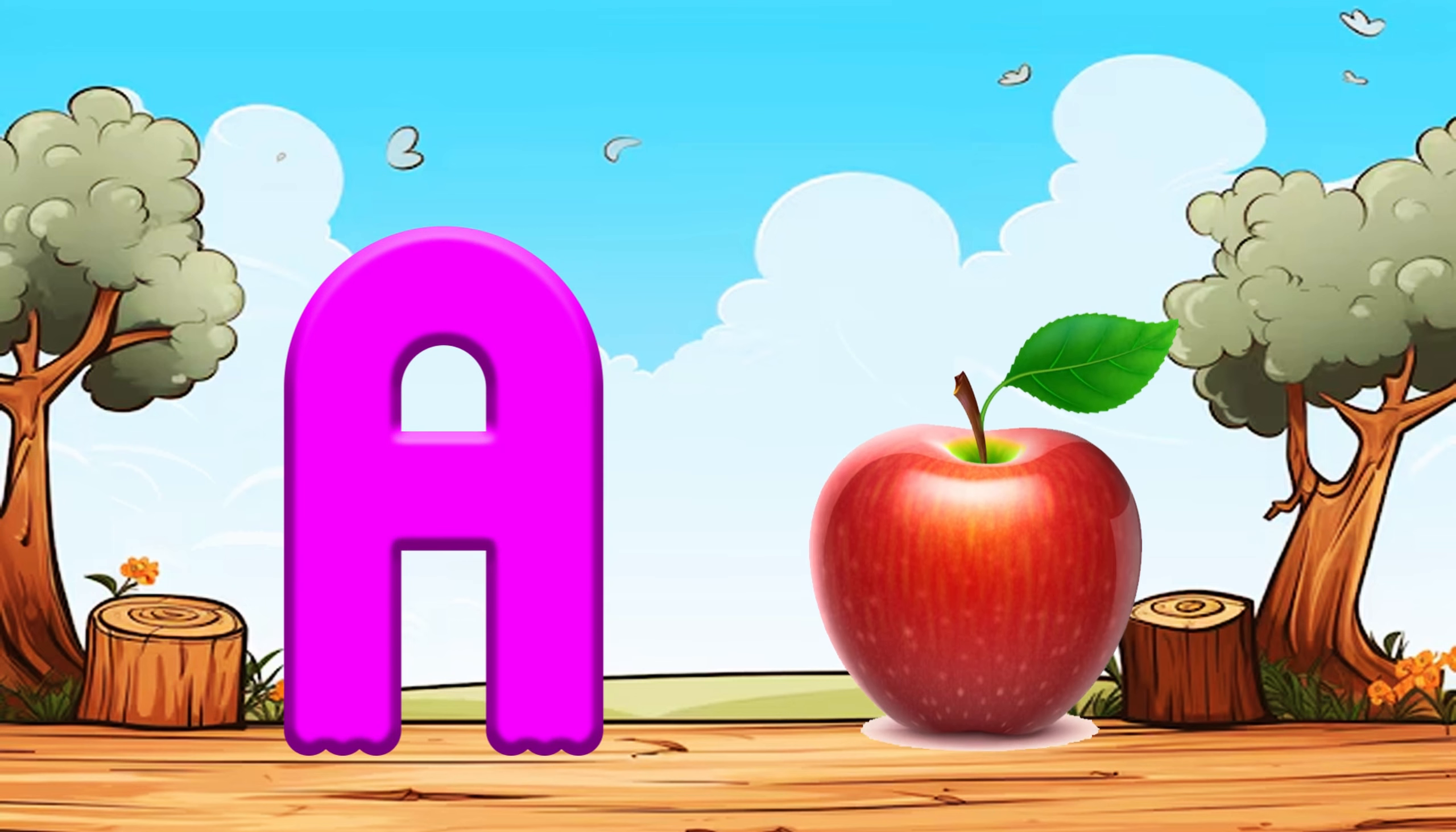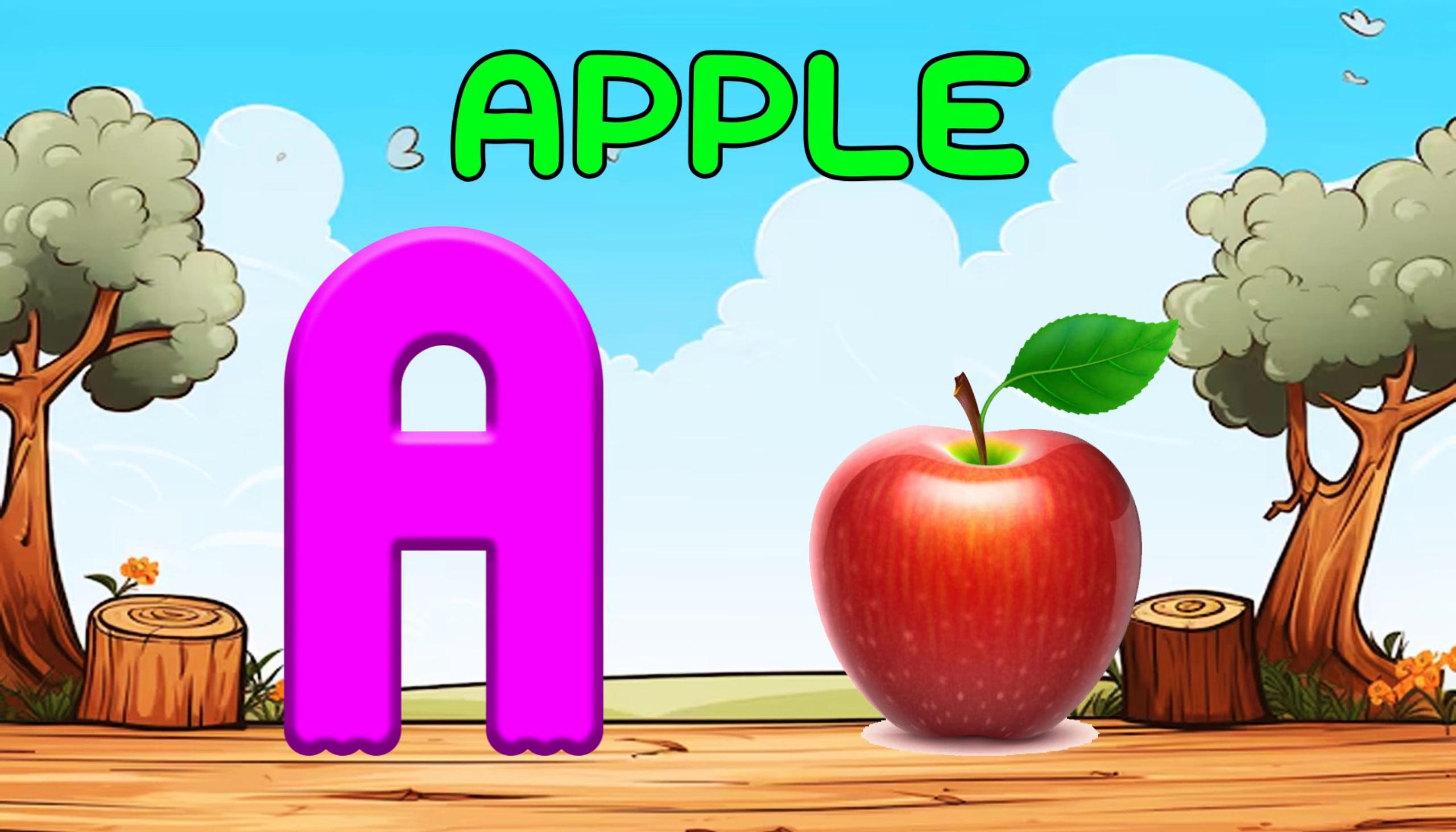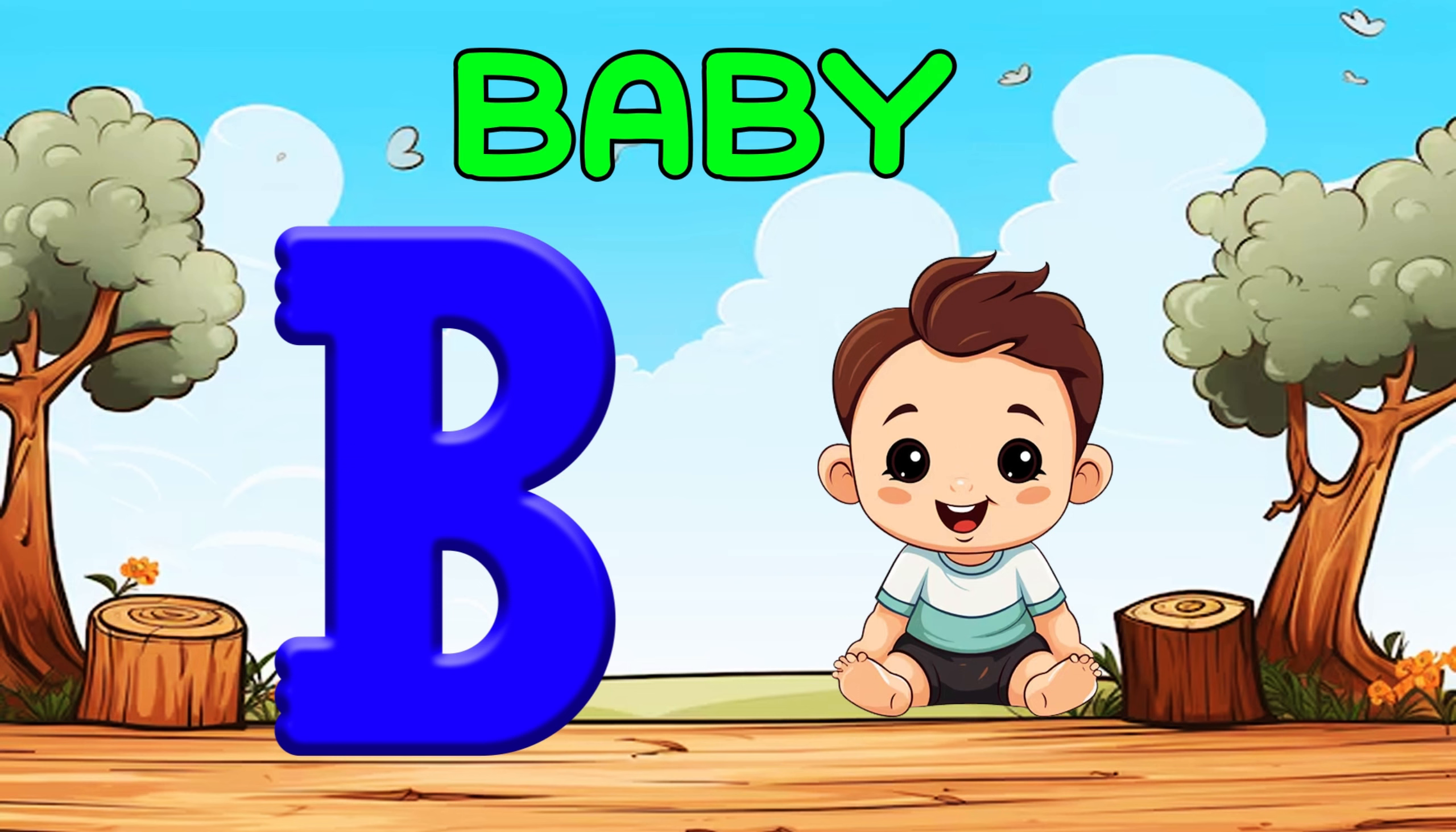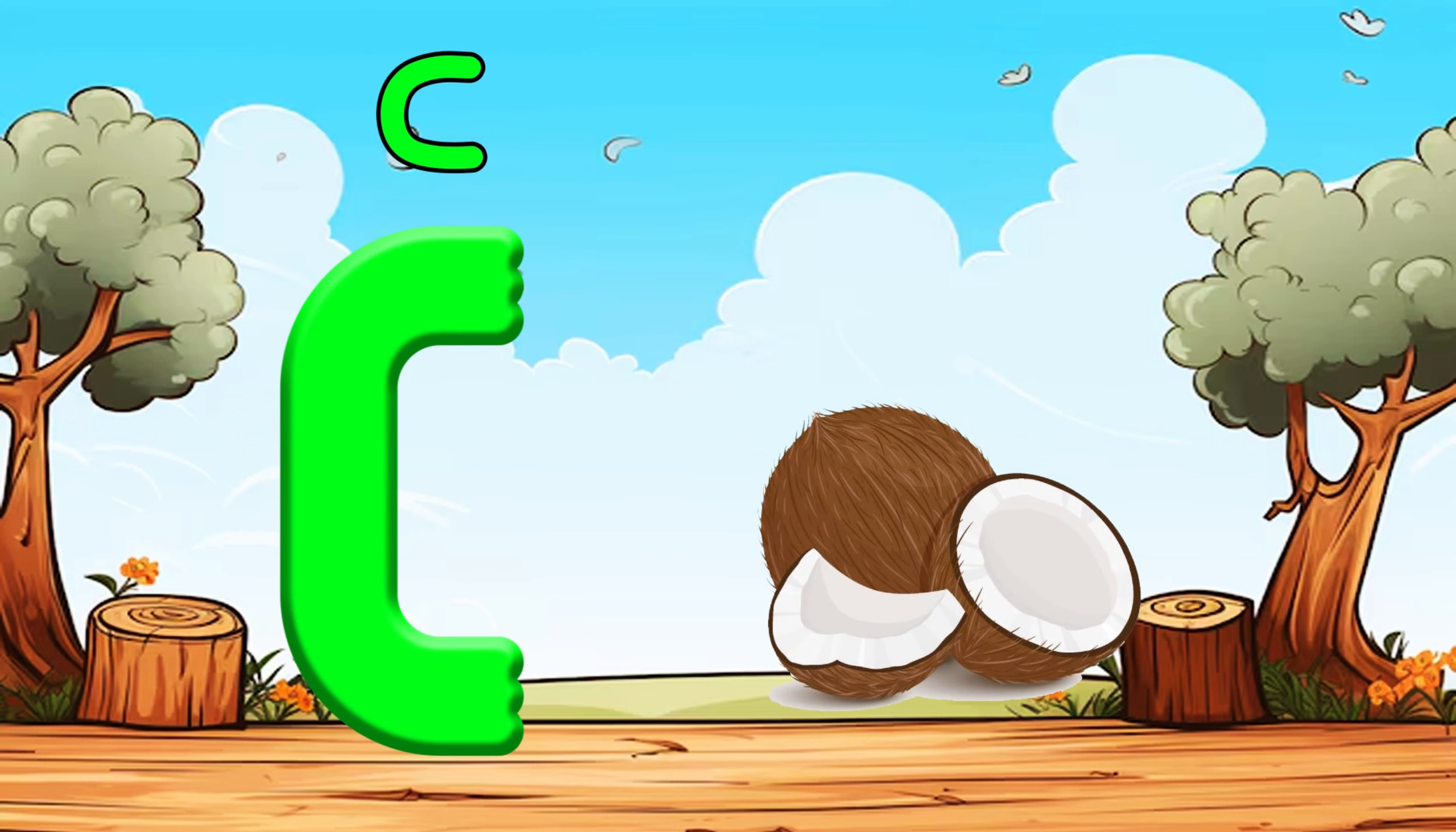A is for Apple, A, A, Apple. B is for Baby, Ba, Ba, Baby. C is for Coconut, Ka, Ka, Coconut.